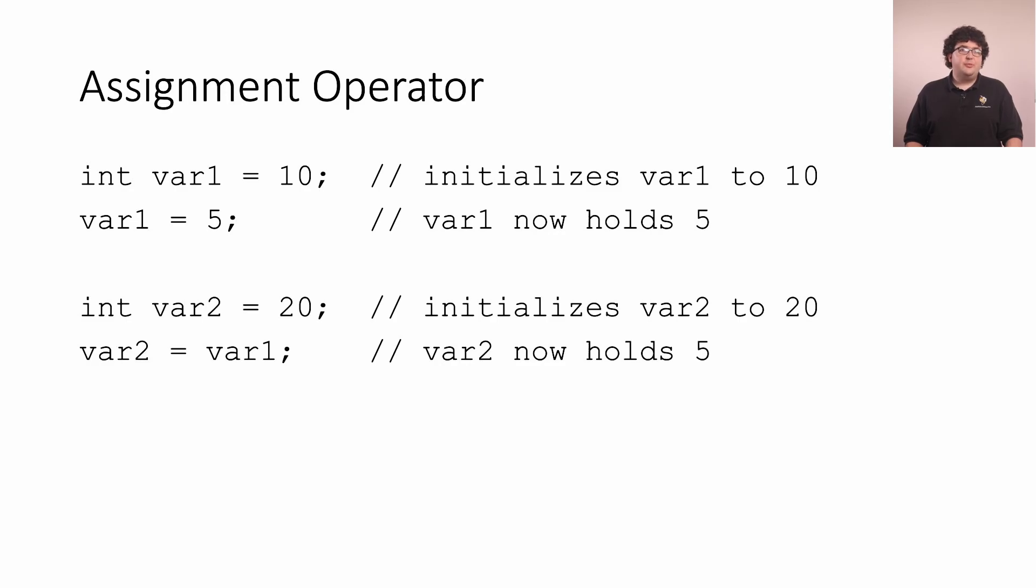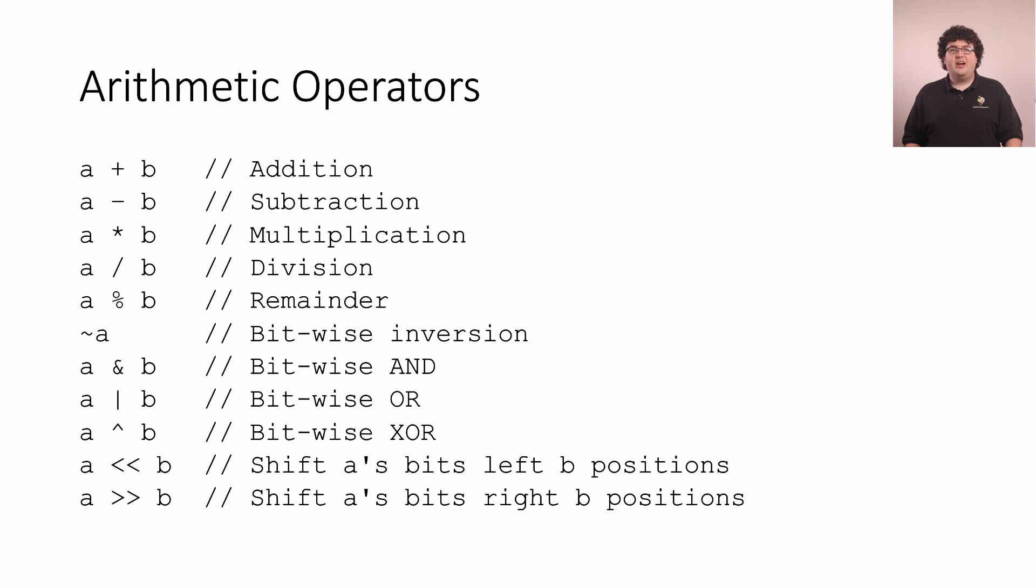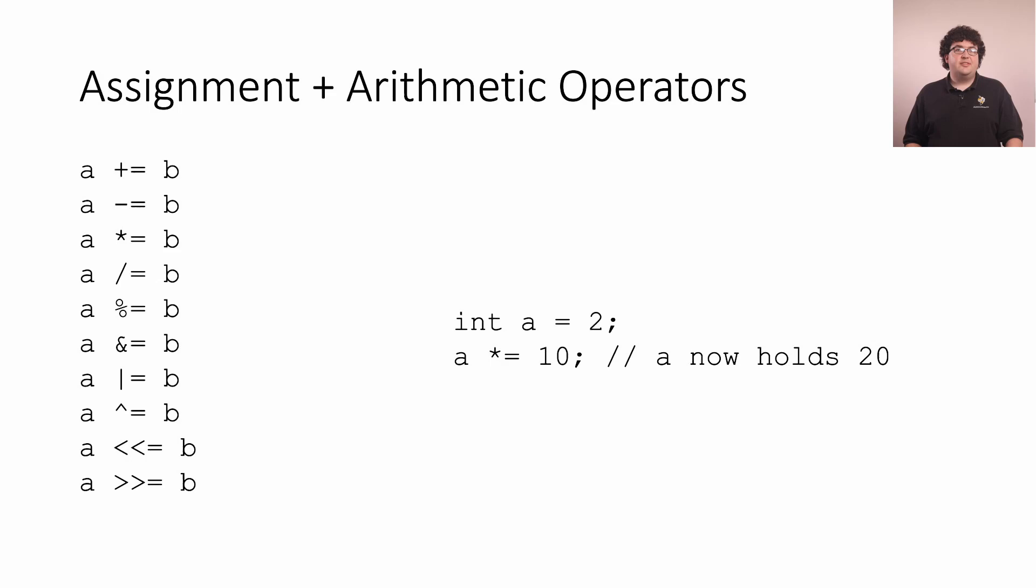We can, of course, do more than just assign new hard-coded numbers to our variables. All of the common arithmetic operators also exist in C++. We can add, subtract, multiply, and divide numbers, and much more. There are even bitwise operators that apply logical rules to the individual ones and zeros in our variables. There are assignment variations of most of these operators. So we can write a line like this that takes the value of a, multiplies it by 10, and saves the new number back into a.